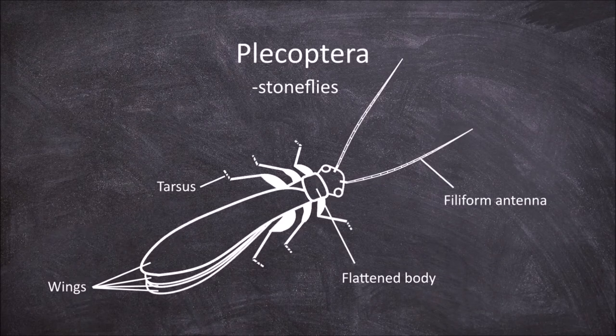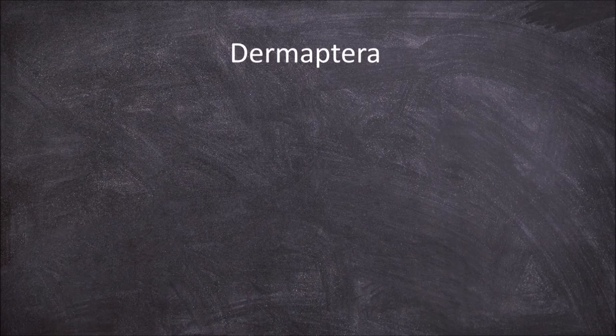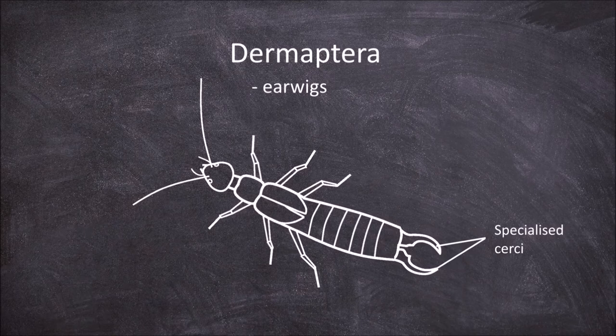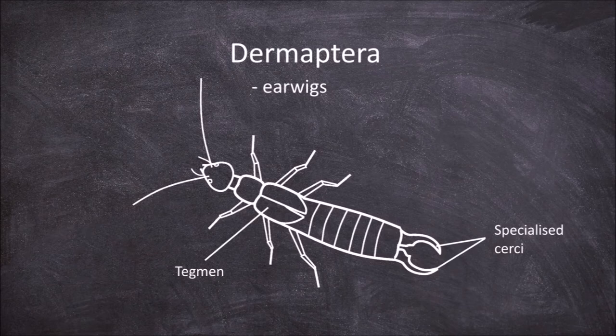The next order is the Dermaptera, which are the earwigs. Earwigs are elongated insects characterized by the presence of specialized cerci that have formed forcep-like pincers at the end of the abdomen. Some possess a set of leathery forewings called tegmina. These are short and act as coverings for the hind wings, which are pleated and folded up under the forewings.